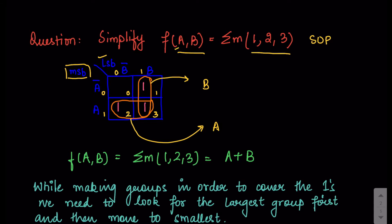Now we have to make groups to cover each of these 1s. The task is to cover all the 1s and make the largest group first. In this case with 4 boxes the largest possible group would be all 4 boxes, but that is not possible because one box is empty. So we make groups of the next priority, which is 2 boxes, following powers of 2. We can make groups horizontally and vertically, but not diagonally in k-maps.